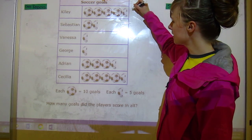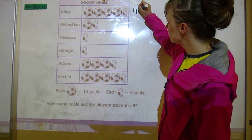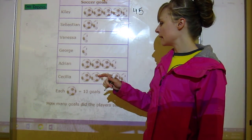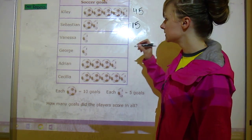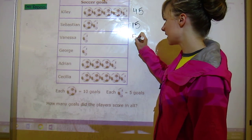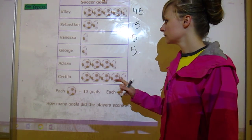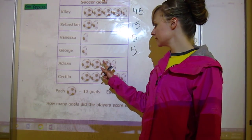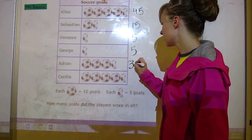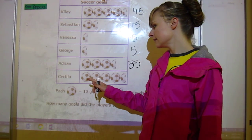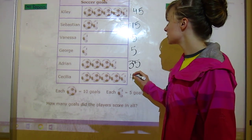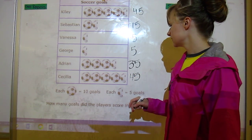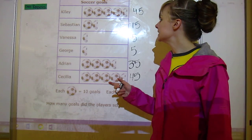Sebastian did ten, fifteen. Vanessa did five and so did George. Adrian got ten, twenty, thirty, thirty-five goals and Cecilia got ten, twenty, thirty, forty, forty-five goals just like Kylie.